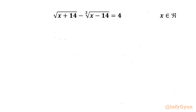Welcome to Infigyan friends. In this video we have one very interesting question from radical equations. The equation is: square root of (x + 14) minus cube root of (x - 14) equals 4, and we are going to calculate real solutions only. So let's get started.